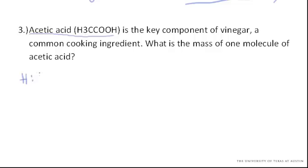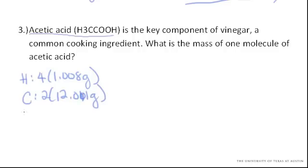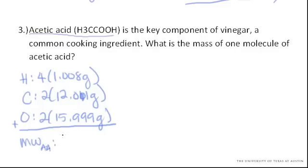So for hydrogen, we have four of them at 1.008 grams. Carbon, two at 12.011 grams. Oxygen, two at 15.999 grams. When you add that up, your molecular weight of acetic acid is 60.052 grams per mole.